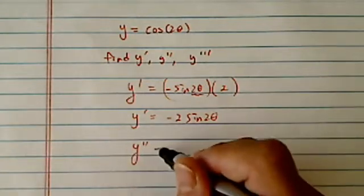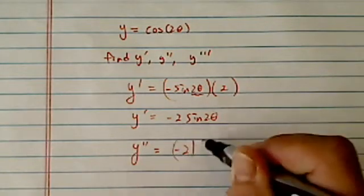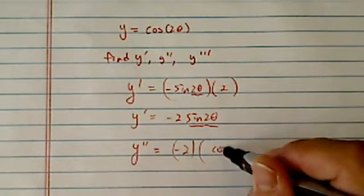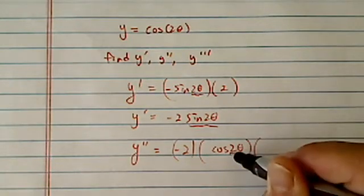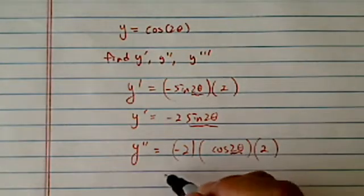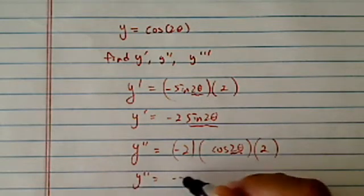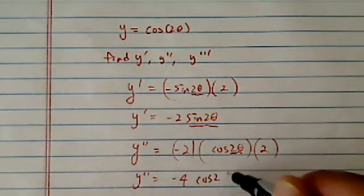Now y double prime is equal to minus 2, and then the derivative of this one, which is cosine 2 theta, and since it's a 2, we have a 2 here, so y double prime equals minus 4 cosine of 2 theta.